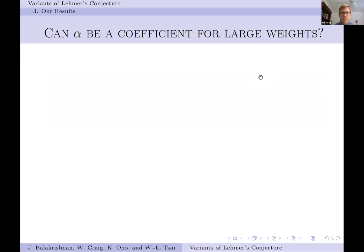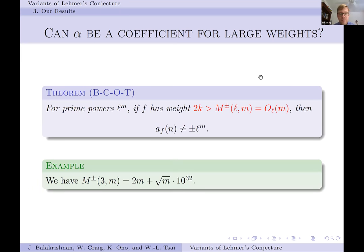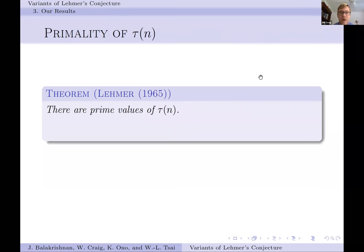We also ask another question: instead of varying alpha, we can vary the weight for m-th powers l^m. If f has large enough weight — linear in m with coefficients depending on l — then a_f(n) can never be plus or minus l^m. For l equal to 3, we prove it suffices to let that bound be 2m plus root(m) times 10^32. We expect this is far from optimal; the reason the lower bound is so large is because of linear forms in logarithms, and these bounds could probably be improved greatly with better methods.